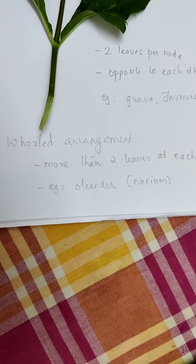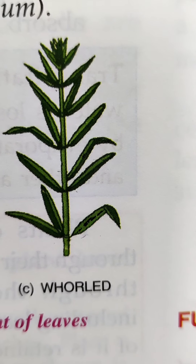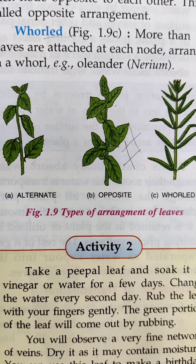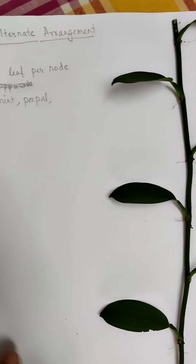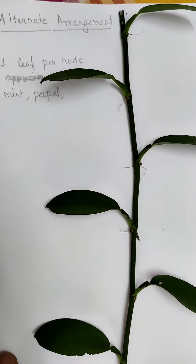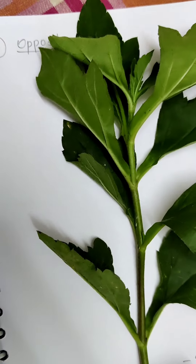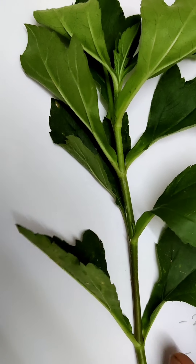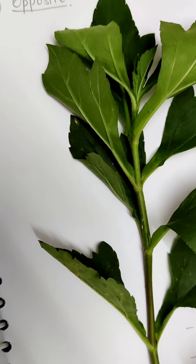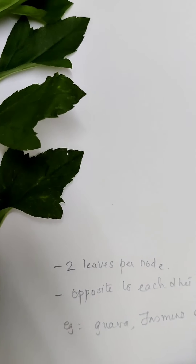So there are three types of arrangement of leaves. One is alternate, one is opposite, and the third one is whorled arrangement. All three are shown here — this is a photo from your textbook. An example of alternate arrangement is mint and peepal, which has one leaf per node. An example of opposite arrangement is two leaves per node — examples include jasmine, guava, etc. And for whorled arrangement, oleander is an example.